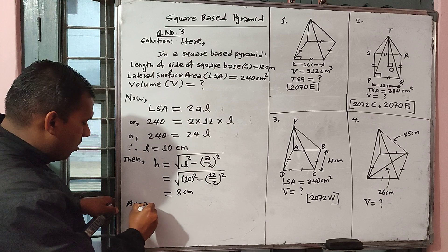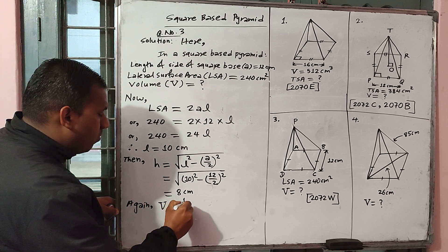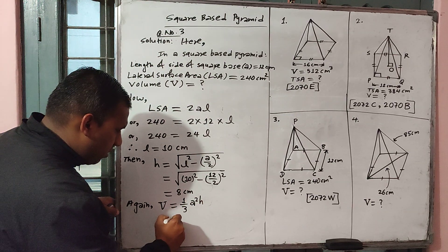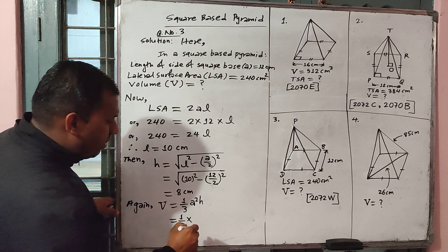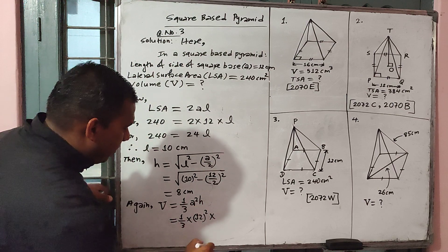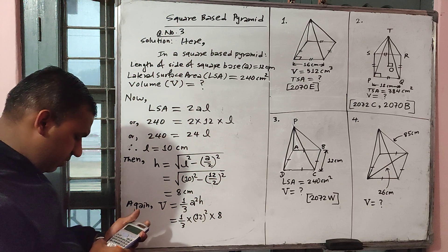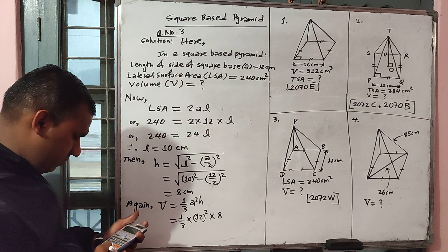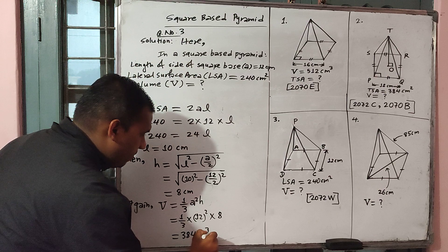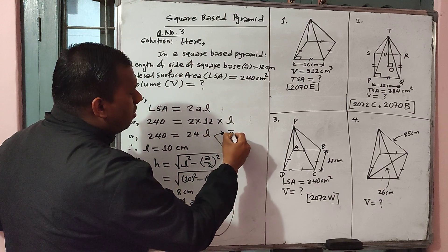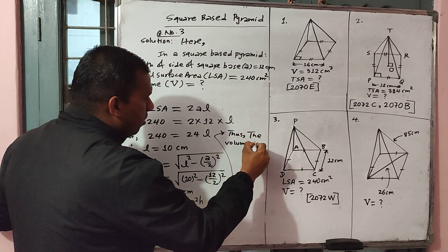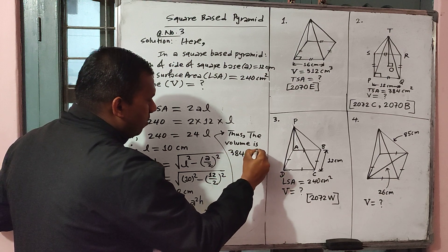After finding vertical height we can get its volume. Volume V equals one-third times A squared times height. A squared is 12 squared, and vertical height is 8. It becomes 384 cm cubed. Thus the volume is 384 cm cubed.